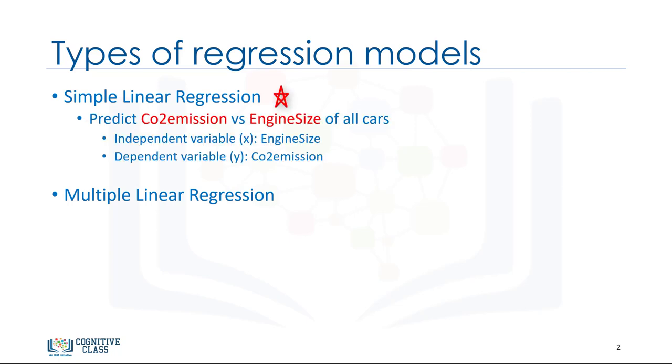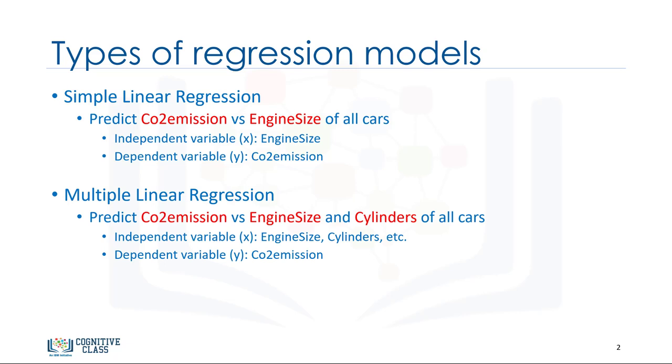Simple linear regression is when one independent variable is used to estimate a dependent variable. For example, predicting CO2 emission using the variable of engine size. In reality, there are multiple variables that predict the CO2 emission. When multiple independent variables are present, the process is called multiple linear regression. For example, predicting CO2 emission using engine size and the number of cylinders in the car's engine.